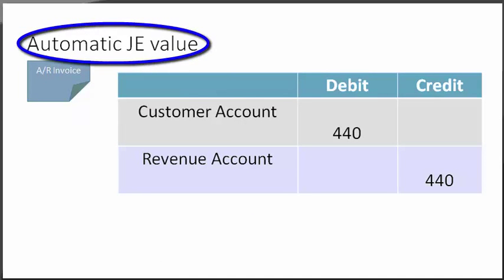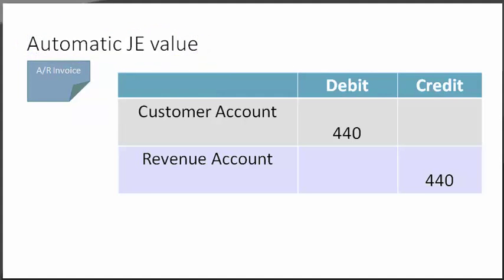Regarding automatic general entry values: we have learned how the system determines which accounts to use in automatic general entries, using the values defined in the general ledger account determination. But how does the system understand the value to be credited and debited in those general entries? For example, in an automatic general entry created by an AR invoice, how would you answer this question?